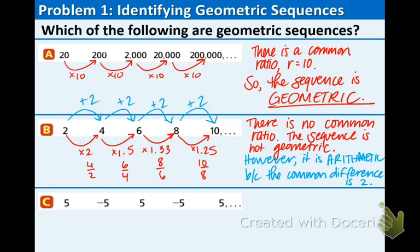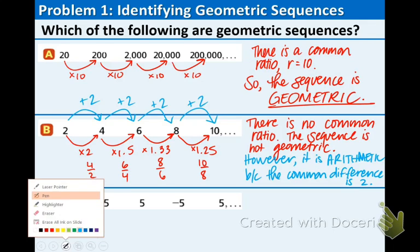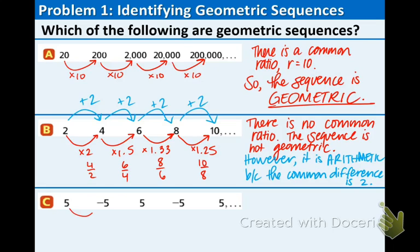Part C: 5, negative 5, 5, negative 5, 5. Well, let's see — is there a number that we can multiply by? Times negative 1, times negative 1, times negative 1, and one more time, times negative 1. So it is the same number over and over again that we're multiplying by. Yes, this sequence is geometric because we have a common ratio of r equals negative 1.